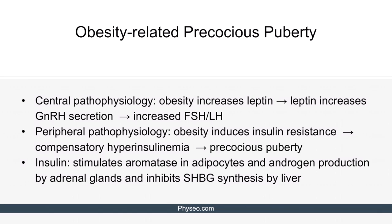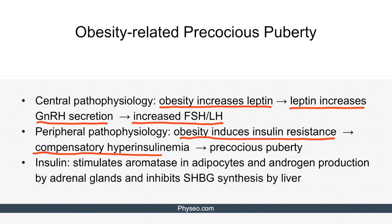Now let's talk about obesity-related precocious sexual development, which has both central and peripheral pathophysiology. Obesity increases leptin production from adipose tissue. Leptin, in turn, increases GnRH secretion, which then activates the hypothalamic-pituitary-gonadal axis. On the other hand, obesity also induces insulin resistance, which results in compensatory hyperinsulinemia. This can cause precocious puberty by stimulating aromatase in the adipocytes, as well as androgen production by the adrenal glands. High levels of insulin also inhibit hepatic synthesis of sex hormone binding globulin. All of these effects increase the sex hormone bioavailability, resulting in precocious puberty.